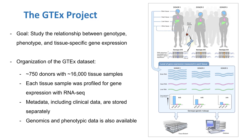On the GTEx portal, you can access the GTEx dataset, which contains about 16,000 tissue samples from 53 different tissue types from about 750 donors. The samples come from various tissues, such as the brain, the liver, or the lung. For each tissue sample, RNA-seq is applied to determine gene expression levels. On the GTEx portal, the metadata, such as tissue type and clinical data, are stored in a separate file from the gene expression raw data for each tissue sample.